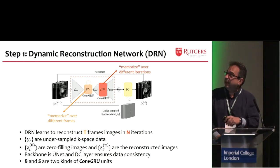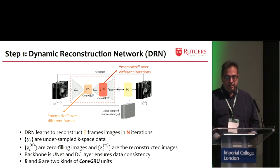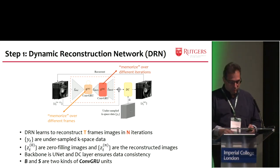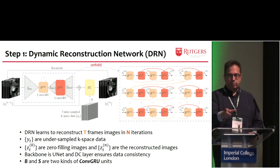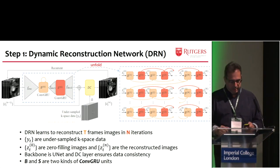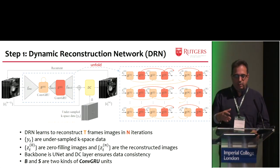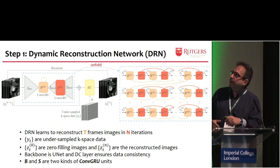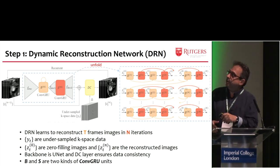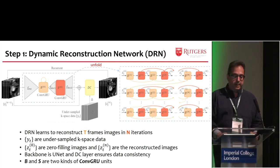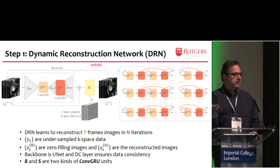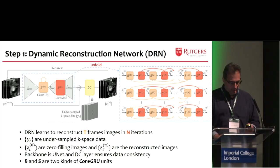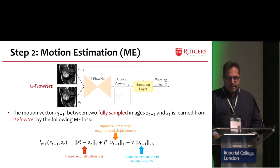B and S are two kinds of recurrent units — in machine learning, this is better than LSTM. It basically takes the time information and integrates between successive frames. These two parts are key. What we use basically shows the details of the B and S: you have a repetition over space and time for some iterations to improve the network. Usually three iterations in this case.